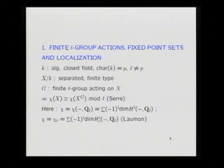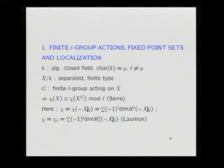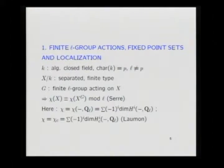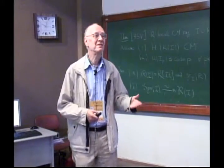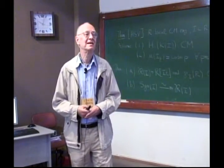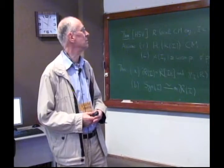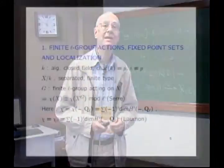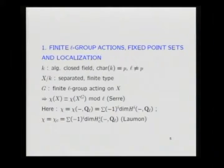Suppose you have an algebraically closed field K of characteristic p, and you have a scheme — separated and of finite type over K, what Grothendieck preferred to call a scheme rather than a variety, since each author has to say what he means by variety. Suppose a finite group G, a finite L-group where L is some prime number different from the characteristic of K, acts on X.